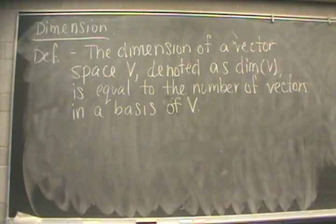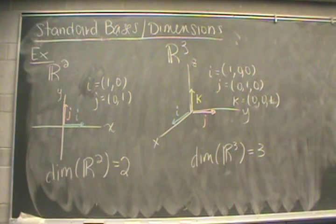Next, let's talk about dimension. The dimension of a vector space V is equal to the number of vectors that are in a basis for V. The dimension is usually denoted as dim(V) or dim V. So what I'd like to do next is give you a bunch of examples of what are called standard bases and standard dimensions for vector spaces that we've seen already.